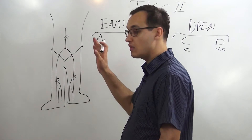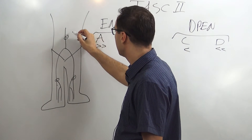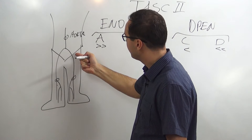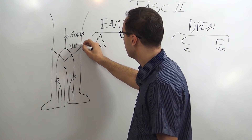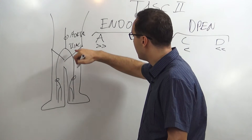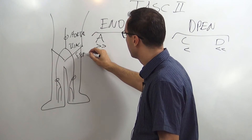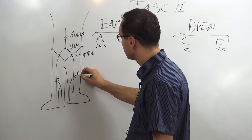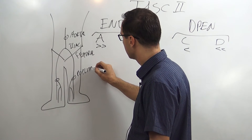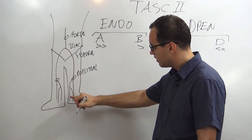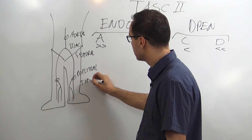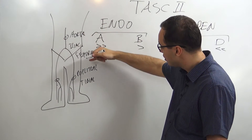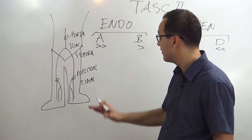At the top we have the aorta. Then above the groin we have the iliac arteries. Below the groin we have the femoral arteries. When we come down further we have the popliteal artery. Then below the knee we have the tibial arteries. So: aorta, iliac, femoral, popliteal, tibial — that's the main arterial sequence.